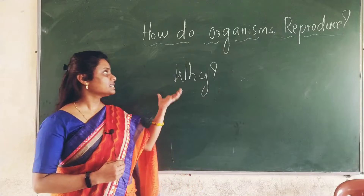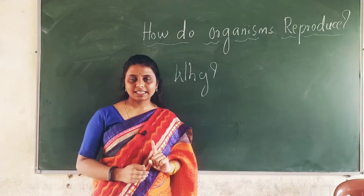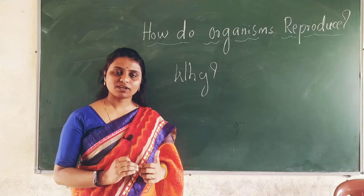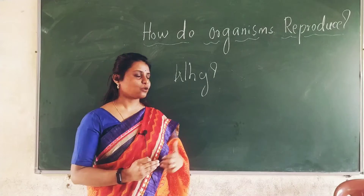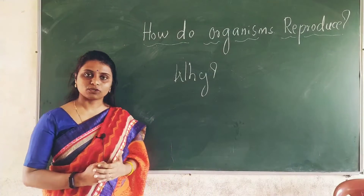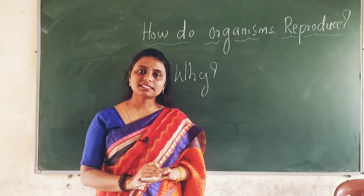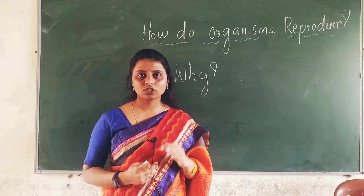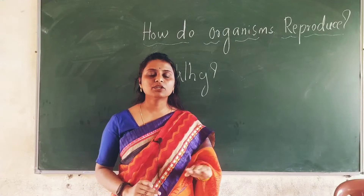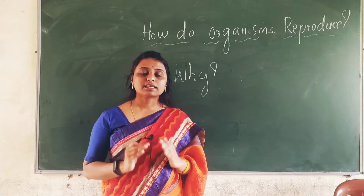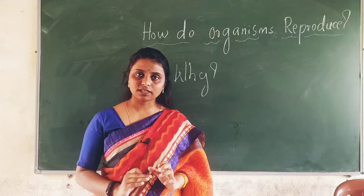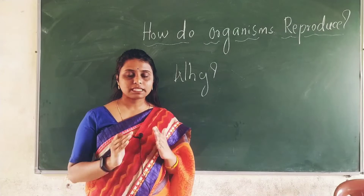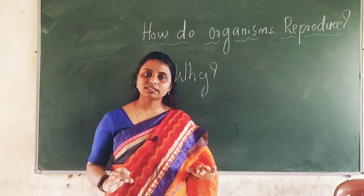So why is it important to reproduce? Pause the video and comment your answers below. If a particular generation of bacteria does not reproduce, that will be the end of that particular type of bacteria. So for the existence of a particular species on the surface of the earth, it is necessary to reproduce. Reproduction is a process which keeps that particular species alive on earth.